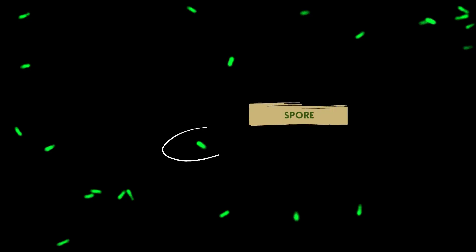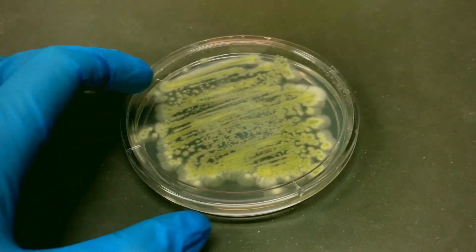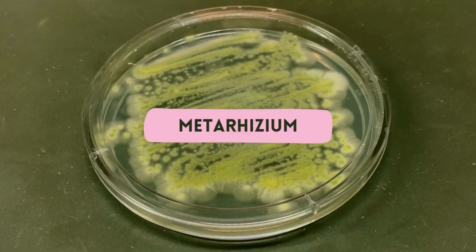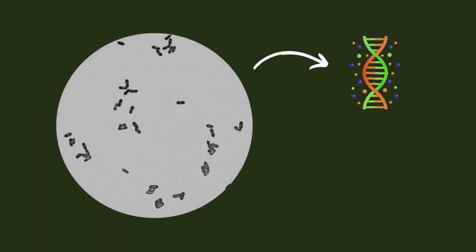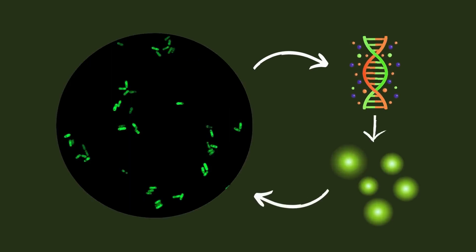What are these glowing dots? These are the microscopic spores of this fungus called metarizium, and they are glowing because this is a genetically modified strain that produces fluorescent proteins, making it glow under a specific microscope.